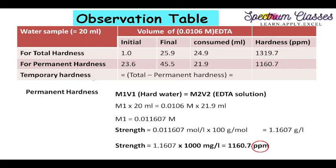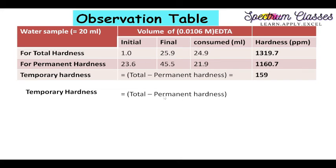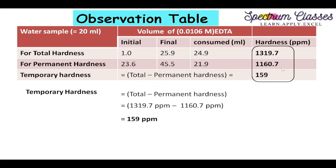Now we have to calculate the temporary hardness of the given water sample. Temporary hardness equals total hardness minus permanent hardness. Substituting the values, on subtraction I get 159 ppm as the value for temporary hardness. All these values are summarized in the table: total hardness, permanent hardness, and temporary hardness of the given water sample.